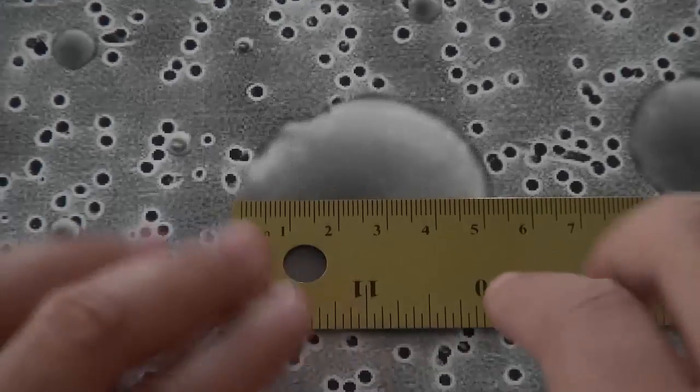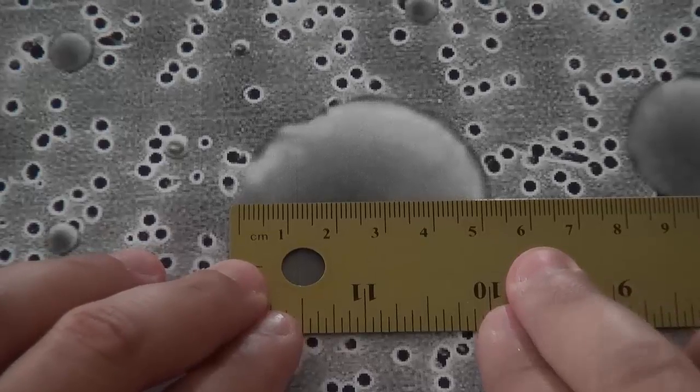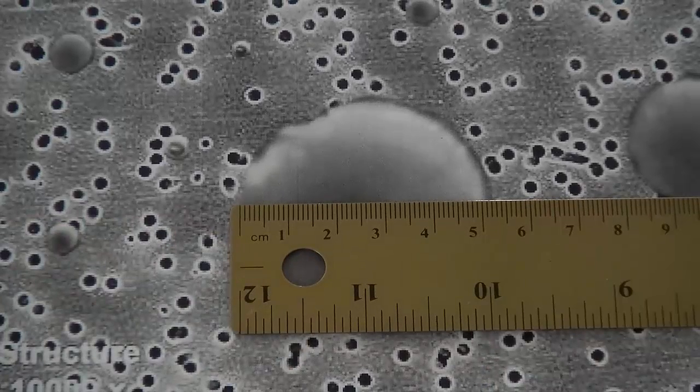Identify all particles in the field of view image and measure their corresponding diameters with the ruler. For the particle shown here, the diameter is about 5 centimeters.